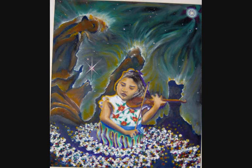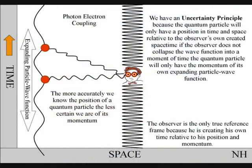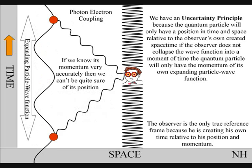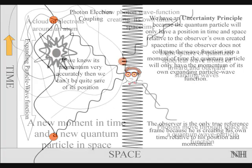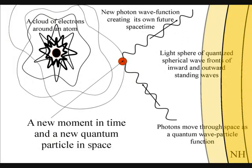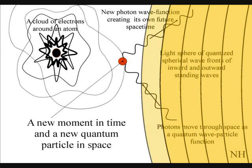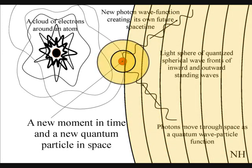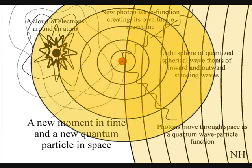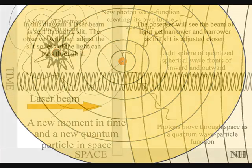Therefore, the more accurately we know the position of a quantum particle, the less certain we are of its momentum, and if we know its momentum very accurately, then we can't be quite sure of where it is. This is because to observe the quantum particle, we create a photon-electron coupling, collapsing the wave-particle function into a moment of time and space that is part of the observer's own created space-time. This can explain what the observer actually sees.